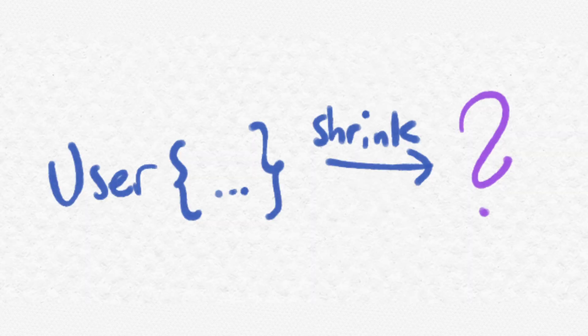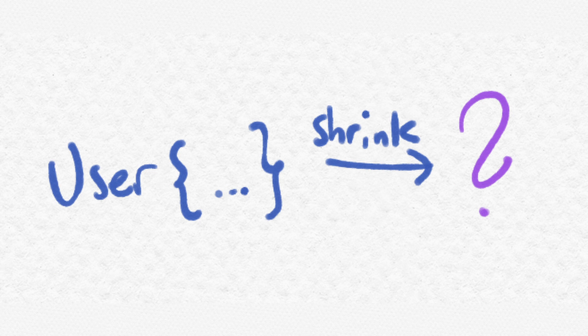And because your app will most likely have types the testing library doesn't know about, you need to somehow tell the library how you want to shrink those values.